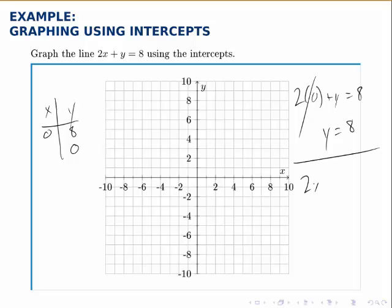Similarly when y is 0, we have 2x plus 0 equals 8, so simply 2x equals 8, in which case x equals 4, dividing both sides by 2.